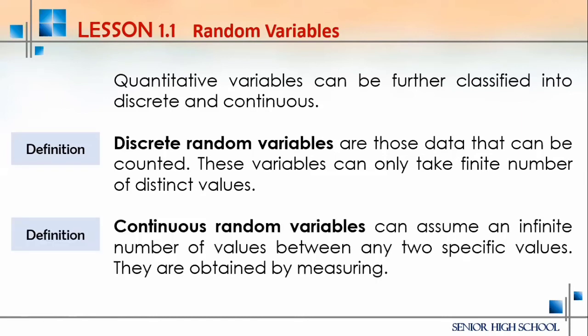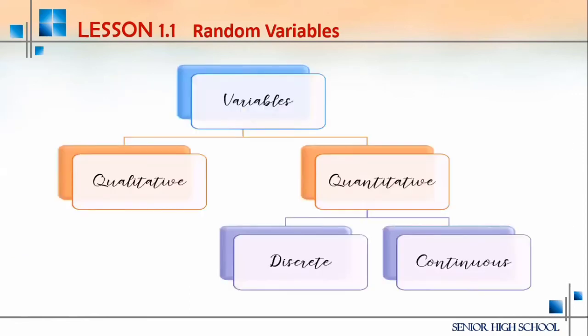Continuous random variables can assume an infinite number of values between any two specific values. They are obtained by measuring. The best example is height — your height today is not necessarily a round number and differs from your height tomorrow. That is one example obtained by measuring using a tape measure. So, variables divide into qualitative and quantitative, and quantitative further divides into discrete and continuous.